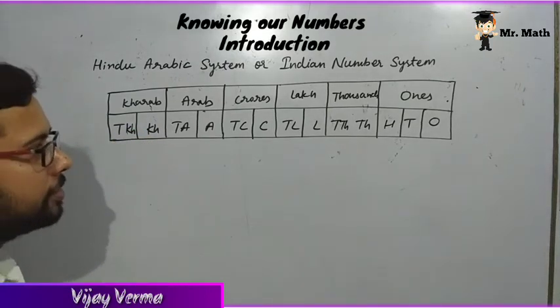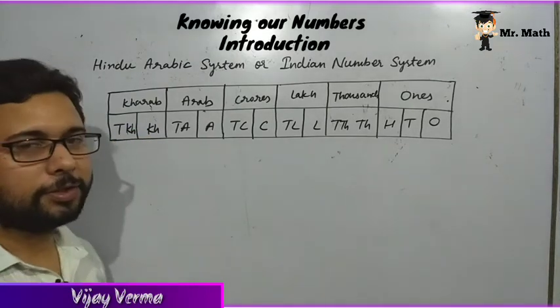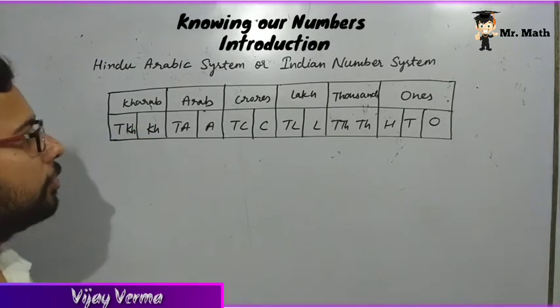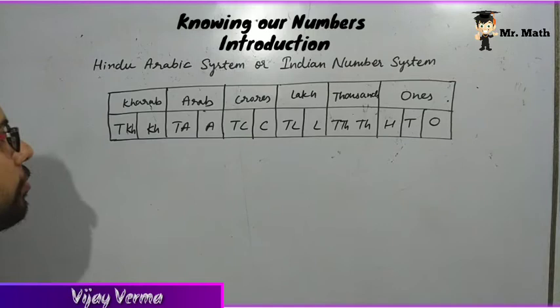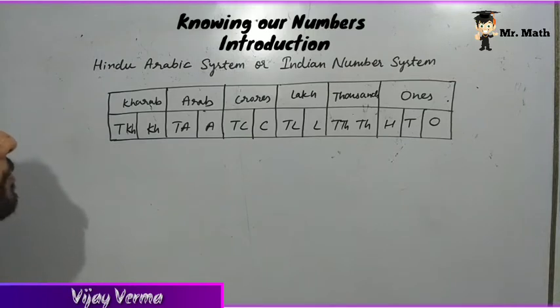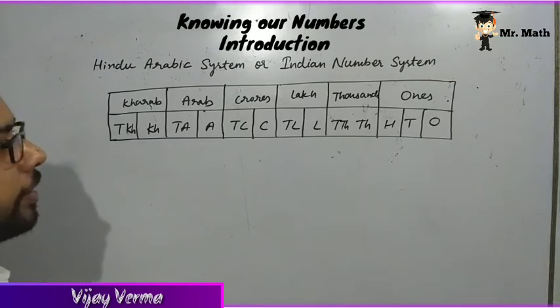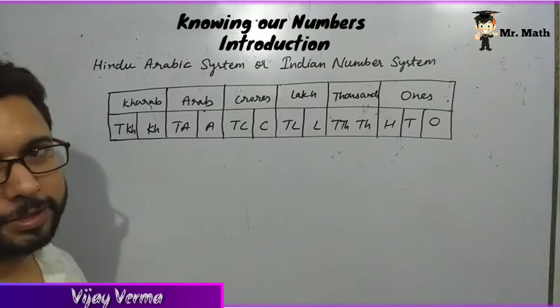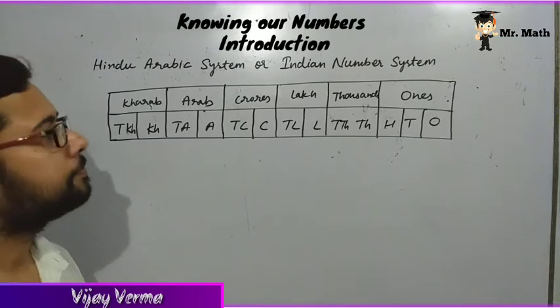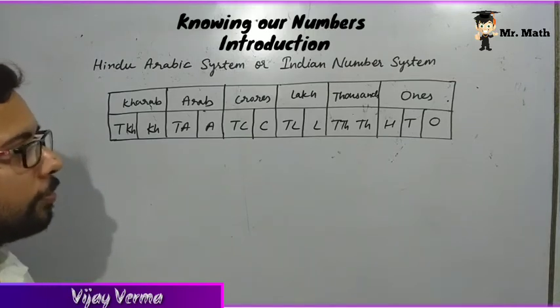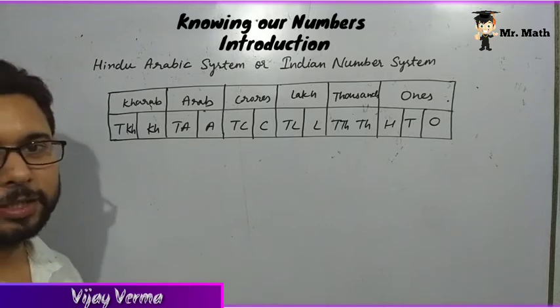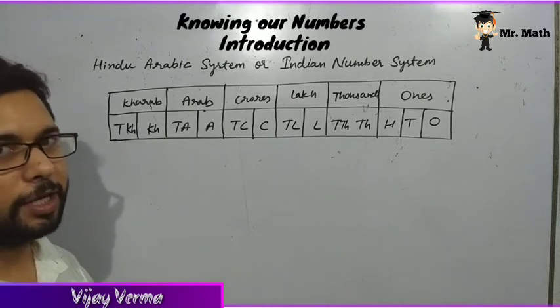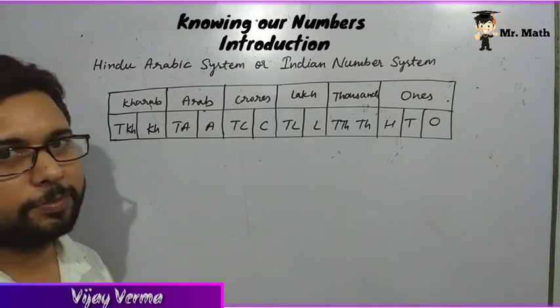So you just need to remember up to this many digits. This is a total of 13 digits. So you need to remember the table for numbers up to 13 digits.